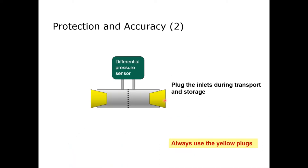Also, when transporting both PF300 and Citrix, it is important to plug the openings so nothing can get in. It used to be yellow plugs — some new ones are white plugs now — but it is very important to plug the inlets shut.